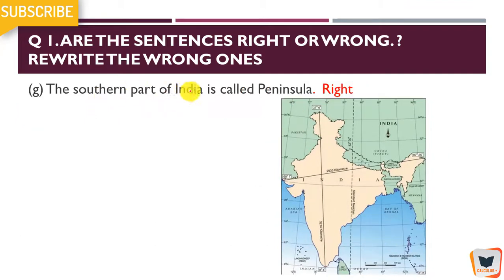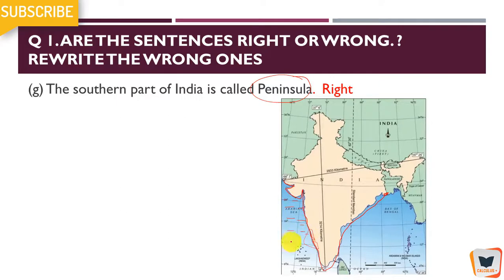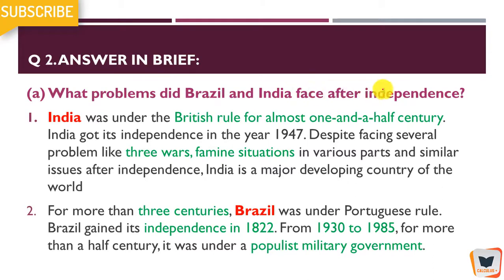The southern part of India is called a peninsula. India's coastline runs from Gujarat, through Maharashtra, Goa, Karnataka, and then up to West Bengal. The southern part of India is surrounded by water on three sides — the Arabian Sea, the Bay of Bengal, and the Indian Ocean. In geographical terms, land surrounded by water is called a peninsula. So the southern part of India being a peninsula is the right answer.